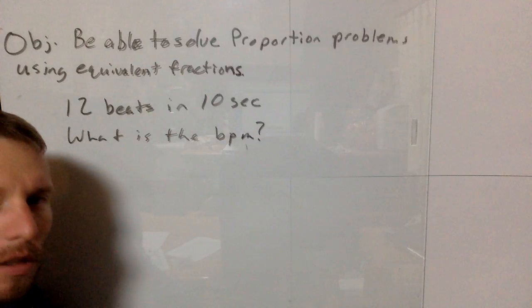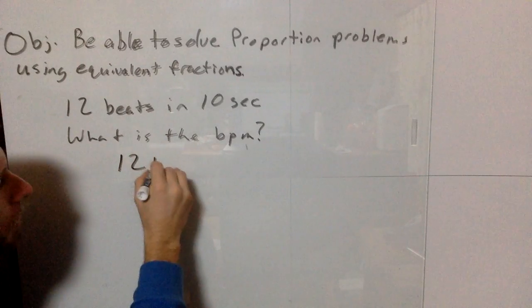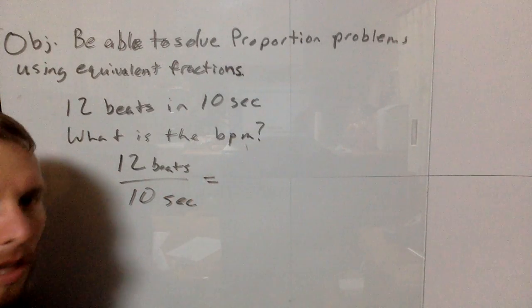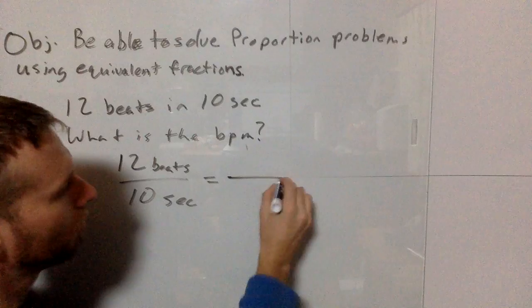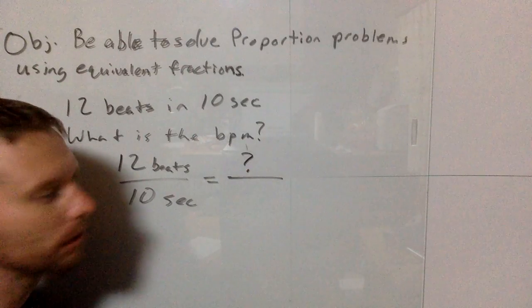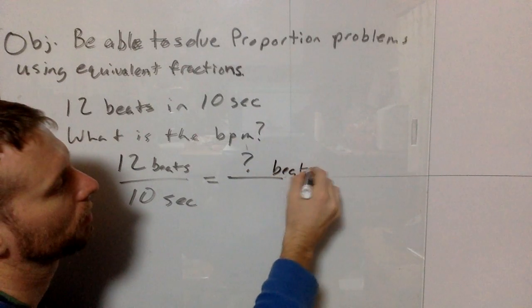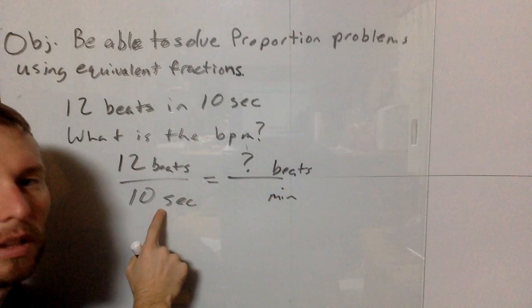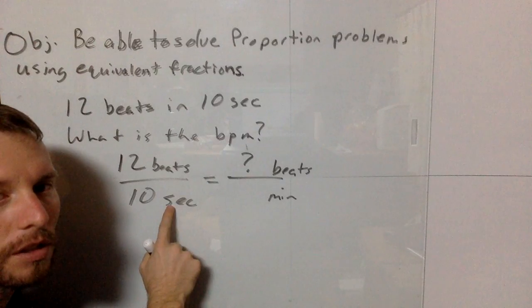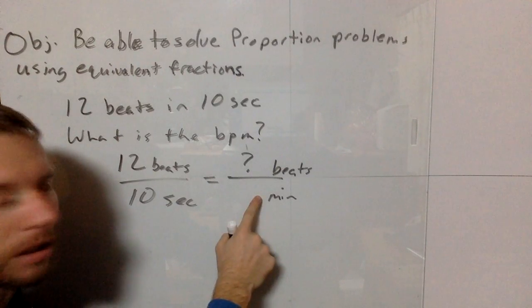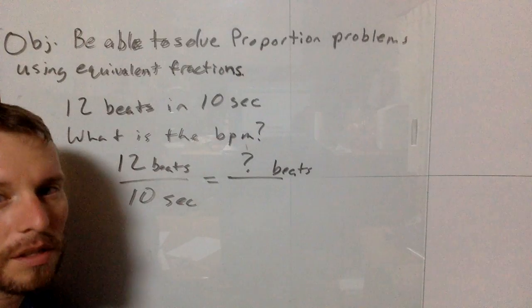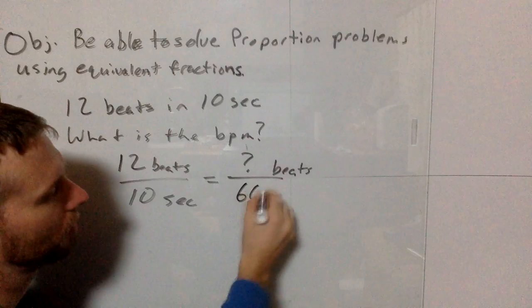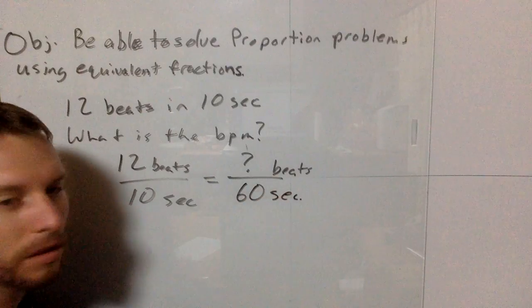I want to find the beats per minute. This is a little tricky. We set up the proportion: 12 beats for 10 seconds. We want to know beats per minute. Since we have seconds on one side and minutes on the other, we need to convert. There are 60 seconds in a minute, so instead of 1 minute, we'll use 60 seconds.